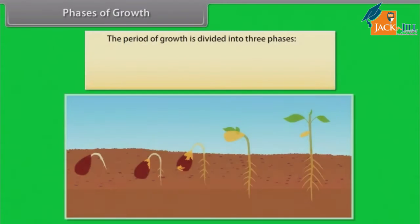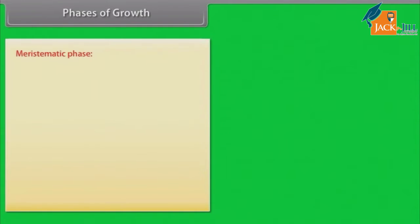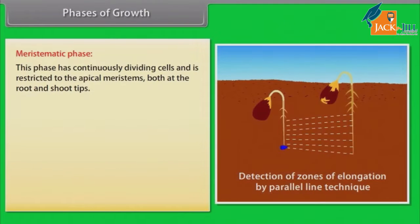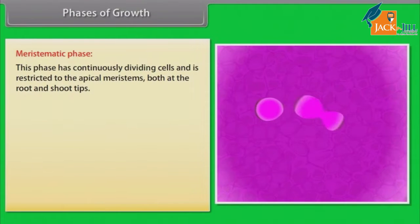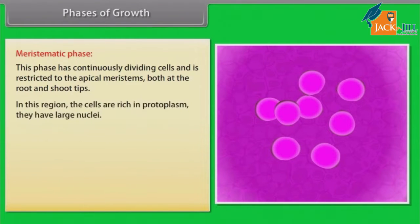Phases of Growth: The period of growth is divided into three phases — meristematic, elongation, and maturation. The meristematic phase has continuously dividing cells and is restricted to the apical meristems, both at the root and shoot tips. In this region, the cells are rich in protoplasm and have large nuclei.